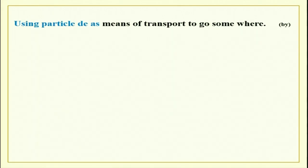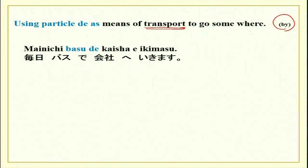The second usage of de, which we have studied earlier, is by means — using a certain method or object to perform an activity. For transport: mainichi basu de kaisha e ikimasu. You can add any mode of transport — densha de, kuruma de, jitensha de, kaisha e ikimasu.